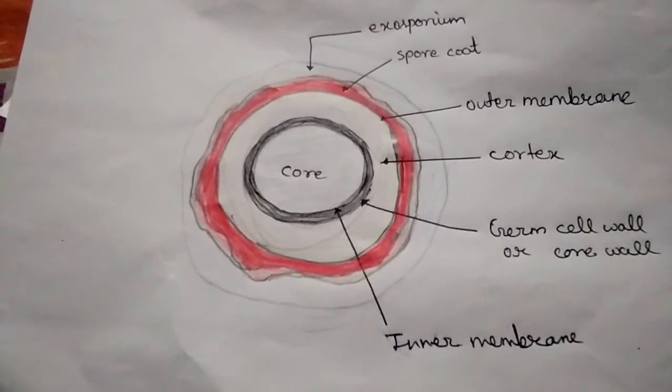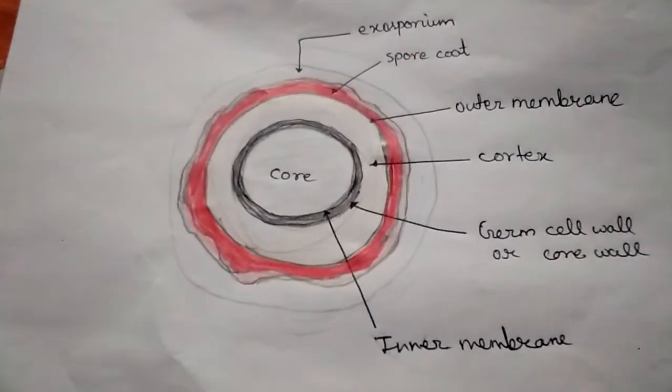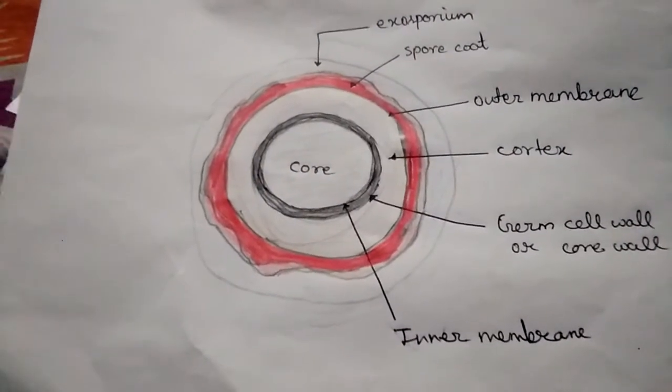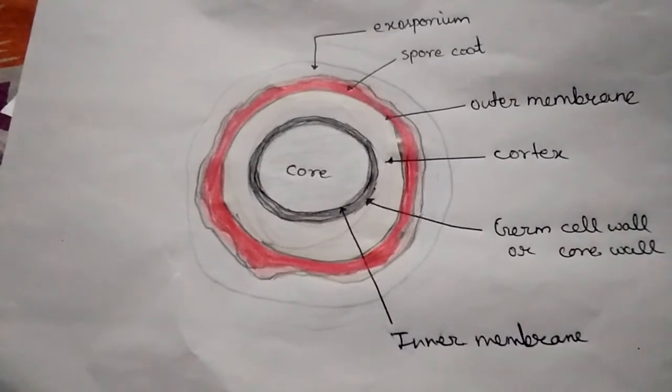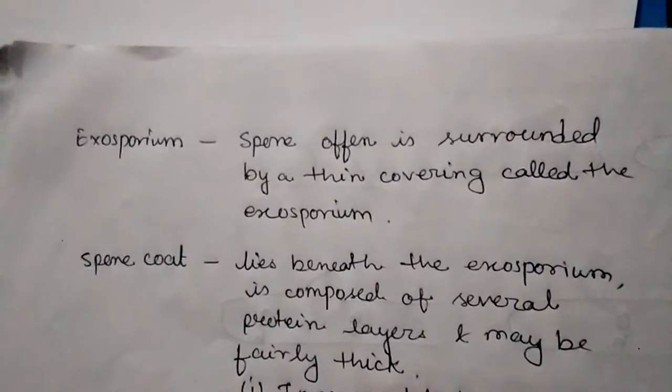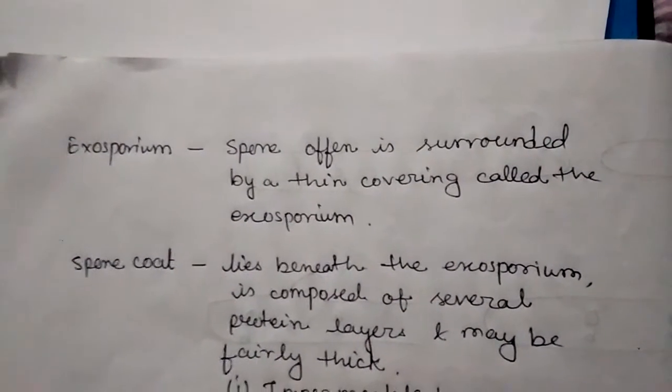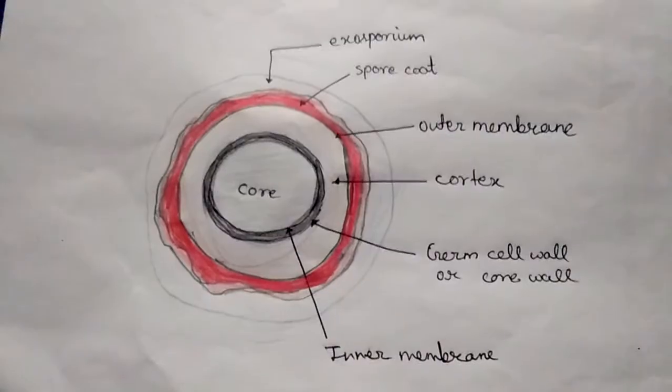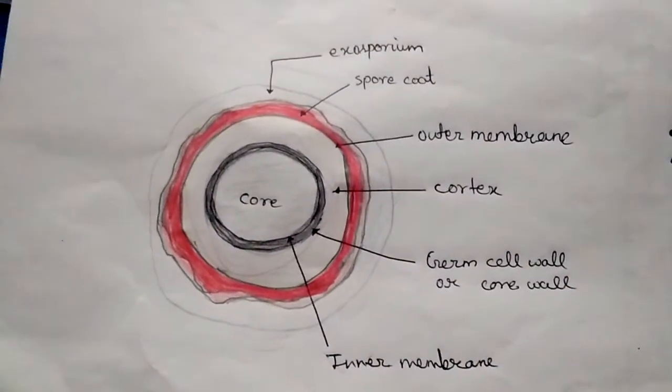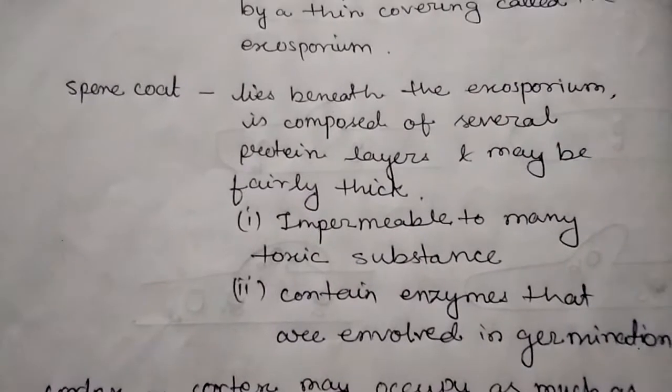Now come into the structure and function of every layer of the endospore. Sometimes spores have a thin layer of covering which is called exosporium. The exosporium surrounds the spore, and beneath it there is a spore coat.